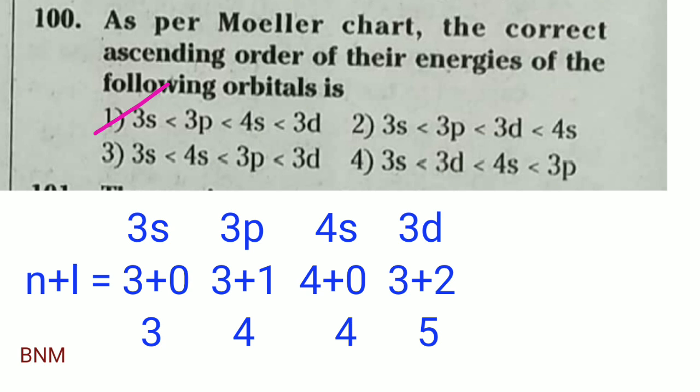As per the Aufbau (molar) chart, the correct ascending order of energies of the given orbitals: ascending order means from least to highest energy. Using the n plus l rule — for 4S, n plus l equals 4 plus 0 equals 4; for 3P, n plus l equals 3 plus 1 equals 4, but lower n comes first. The first option gives the correct ascending order with 3P before 4S.